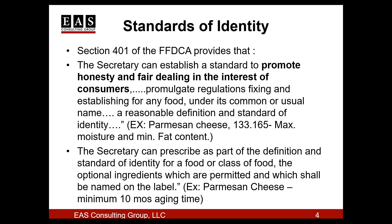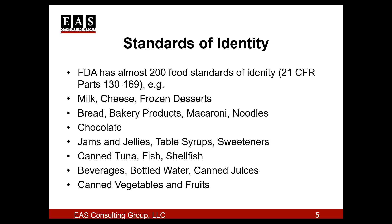For our example of Parmesan cheese, the standard of identity specifies in 21 CFR 133.165 the maximum amount of moisture and minimum fat content, among other things, and also states the minimum aging time of the cheese as 10 months. There are approximately 200 food standards of identity in FDA's regulations. A lot of them were written a really long time ago with the intent of making the names of food products standard so consumers would know what to expect when they purchase a particularly named food product.